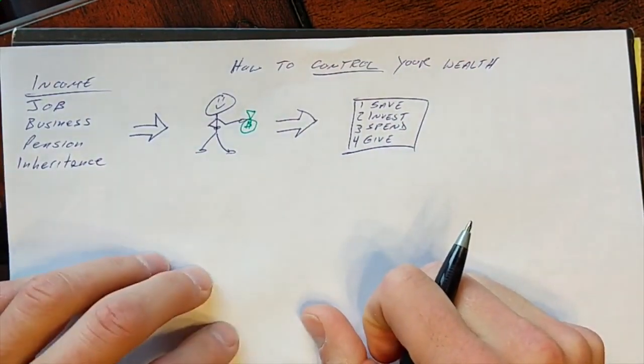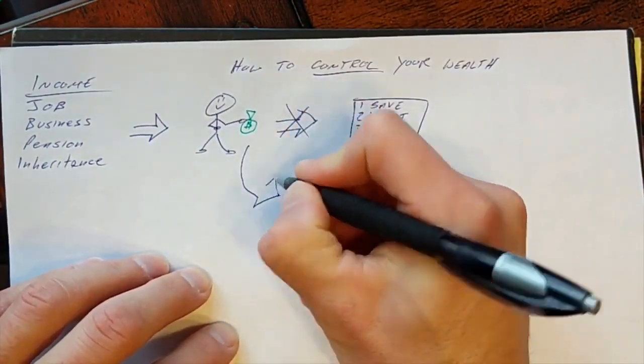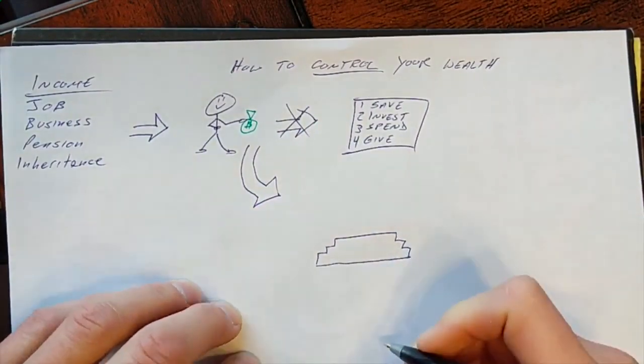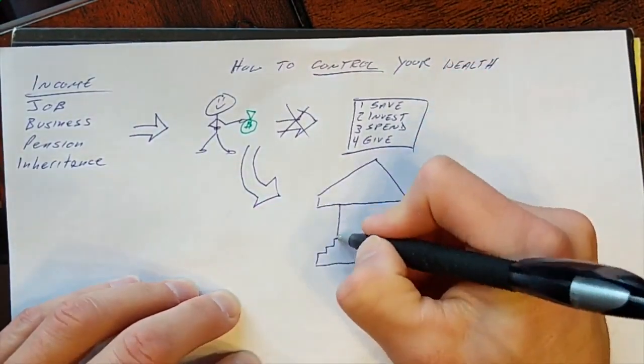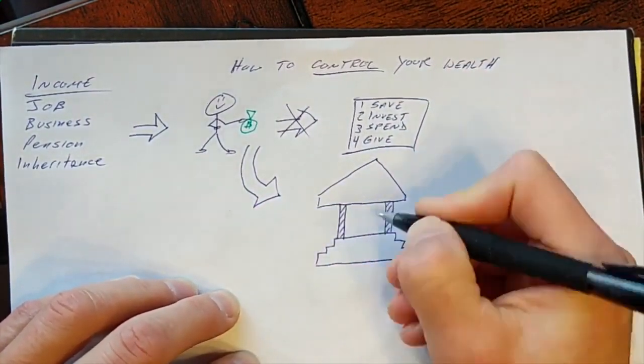Well, what if before we did those things, we first put that money into an area, a place that we control completely? Let's call this place your family bank.